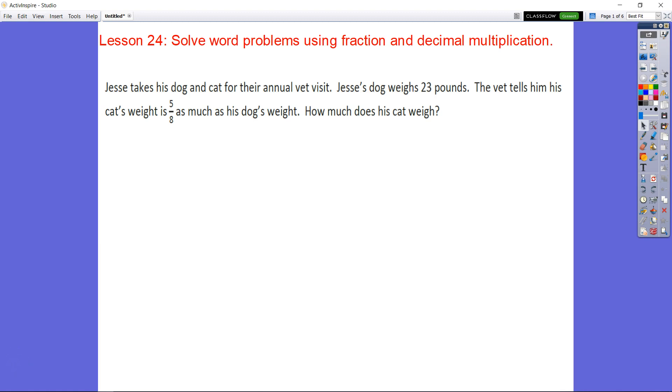Module 4, Topic F, Lesson 24. We're going to be solving word problems using fraction and decimal multiplication. Let's take a look at number 1. Jesse takes his dog and cat for their annual vet visit. Jesse's dog weighs 23 pounds. The vet tells him that his cat's weight is 5 eighths as much as his dog's weight. How much does his cat weigh?